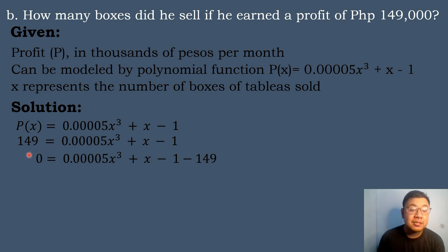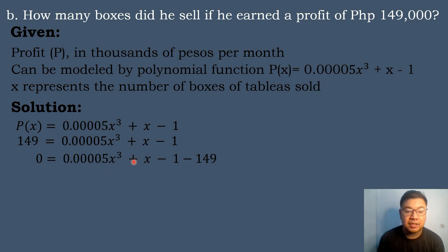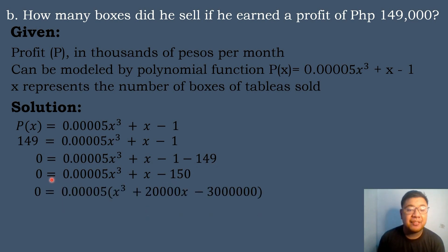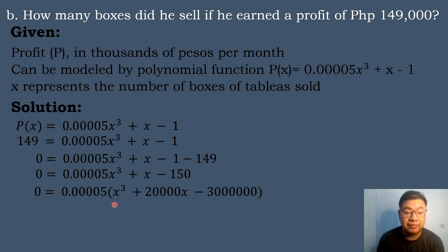We will simplify by transposing 149 to the other side, making it negative 149. Bringing down the terms: 0 = 0.00005x³ + x − 1 − 149, so 0 = 0.00005x³ + x − 150. Simplifying further by dividing both sides by 0.00005 as the common factor: 0 = x³ + 20,000x − 3,000,000.